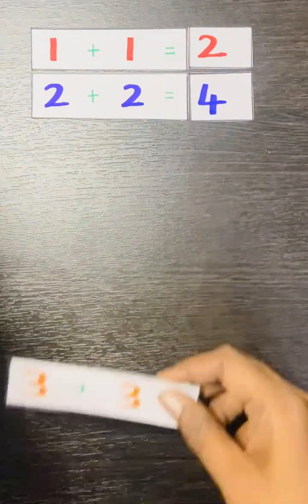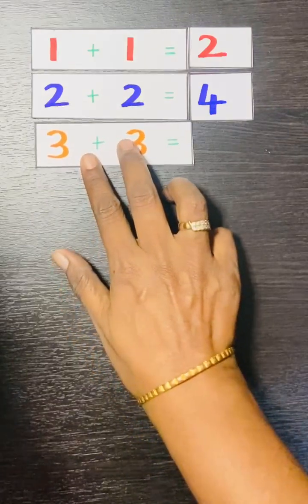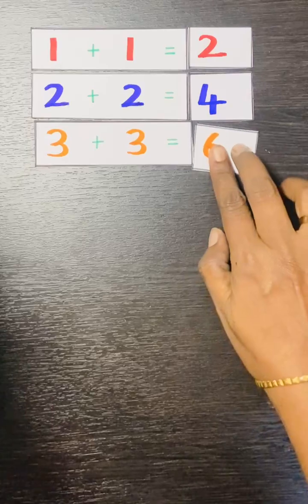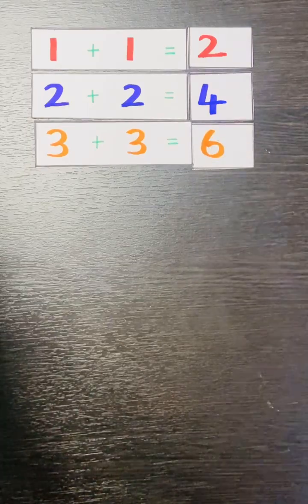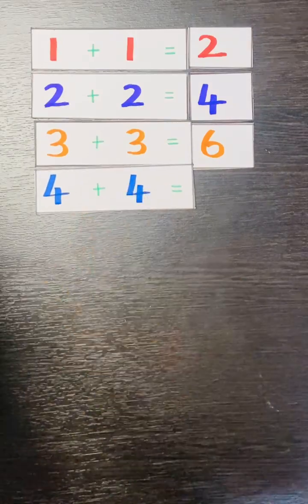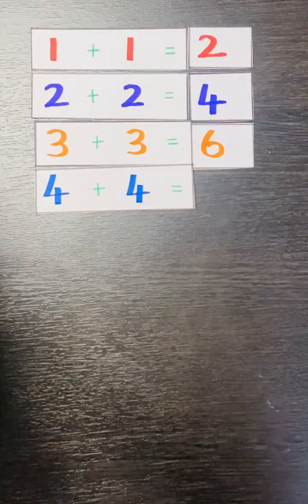Then 3 plus 3. 3 plus 3 is equal to 6. Then what is the next number? 4. 4 plus 4. 4 plus 4 is equal to 8.